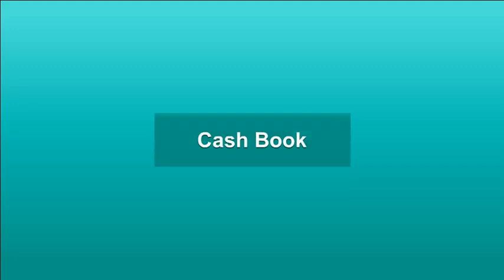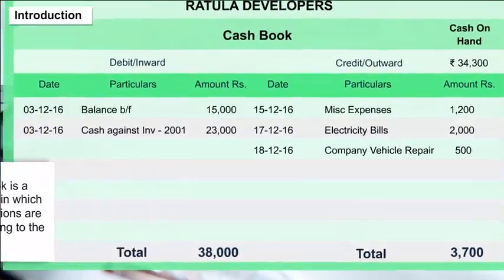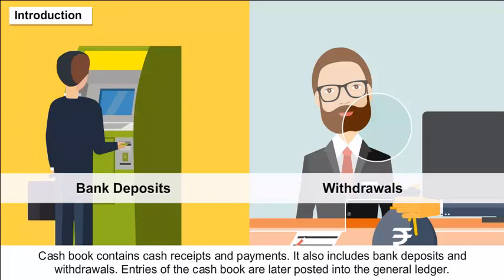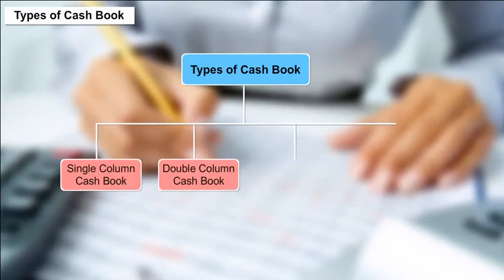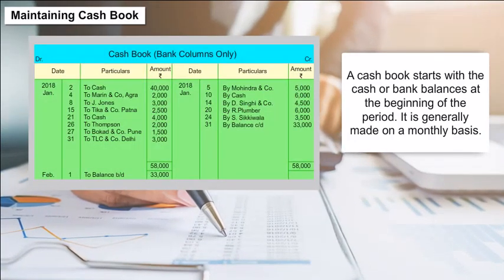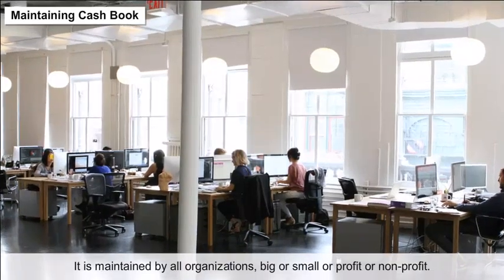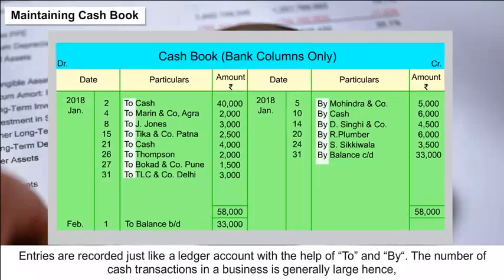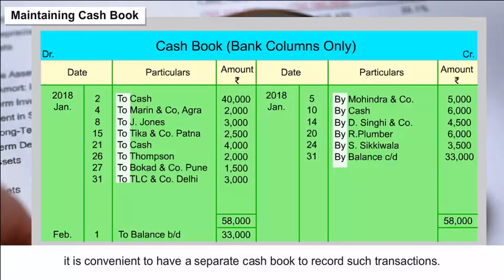Cash Book Introduction: The cash book is a financial journal in which all cash transactions are recorded according to dates. It contains cash receipts and payments, and also includes bank deposits and withdrawals. Entries of the cash book are later posted into the general ledger. Types of cash book include: single column, double column, triple column, and petty cash book. A cash book starts with the cash or bank balances at the beginning of the period. It is generally made on a monthly basis and maintained by all organizations, big or small, profit or non-profit. Entries are recorded like a ledger account using 'to' and 'by'. Because the number of cash transactions is generally large, it is convenient to maintain a separate cash book.